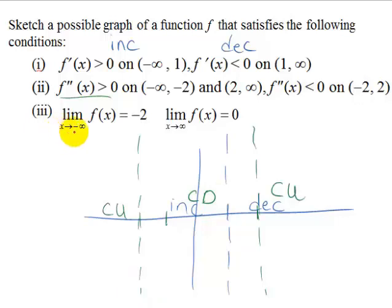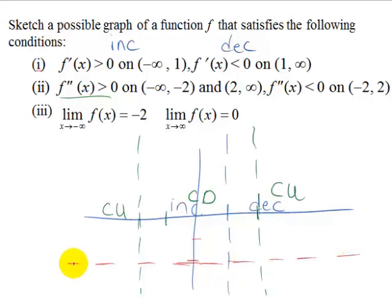The limit as x approaches negative infinity of the function is negative 2, so that's telling us that we have a horizontal asymptote at y equals negative 2, and the graph is going to head towards that as we go towards negative infinity. I'm going to draw this because it could be from either side depending on where the graph ends up.